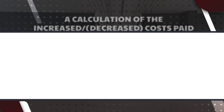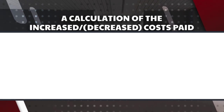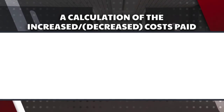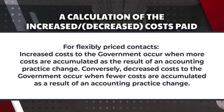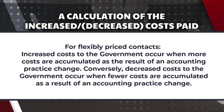A calculation of increased or decreased cost by the government for each contract type should be as follows. For flexibly priced contracts, increased costs to the government occur when more costs are accumulated as a result of an accounting practice change. Conversely, decreased costs to the government occur when fewer costs are accumulated as a result of a cost accounting change.